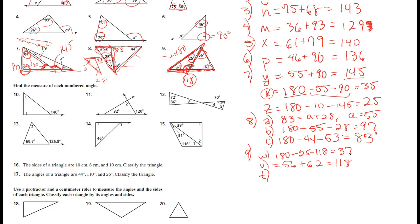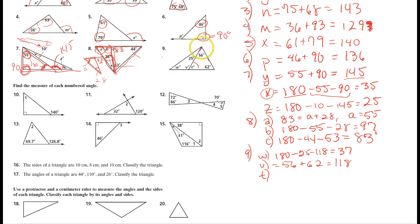For angle T, it's an interior angle of a triangle and I know two out of three angles. Inside a triangle, angles always add up to one hundred and eighty. So T equals one hundred and eighty minus fifty-six minus sixty-two, which equals sixty-two.